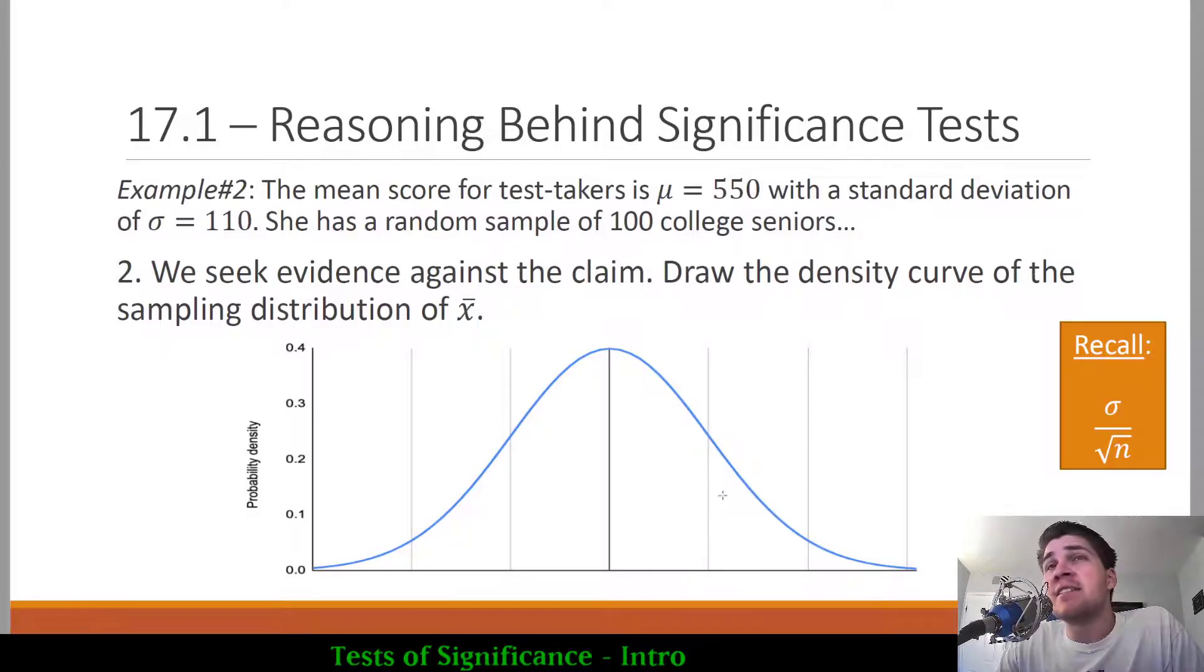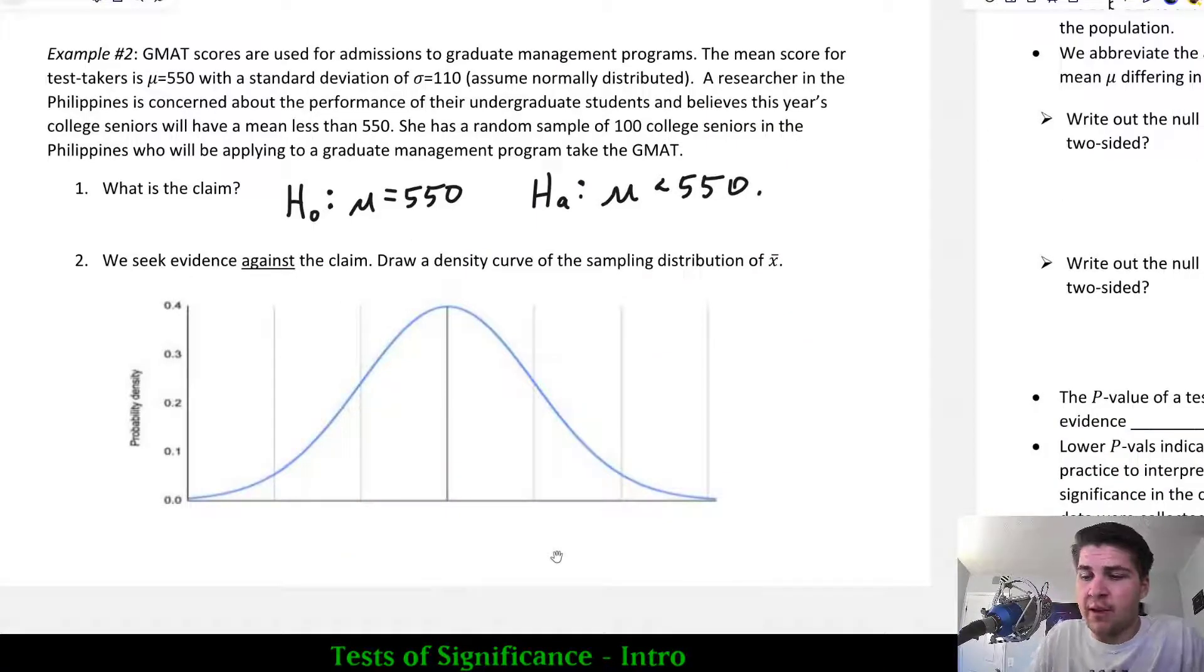Now if we're looking at evidence against the claim, we can always draw the density curve of the given situation because we know our sample size, we know the standard deviation, and we know the mean. And just like we did in chapter 16, we know how a sampling distribution will look as the standard deviation will be reduced by the sample size.